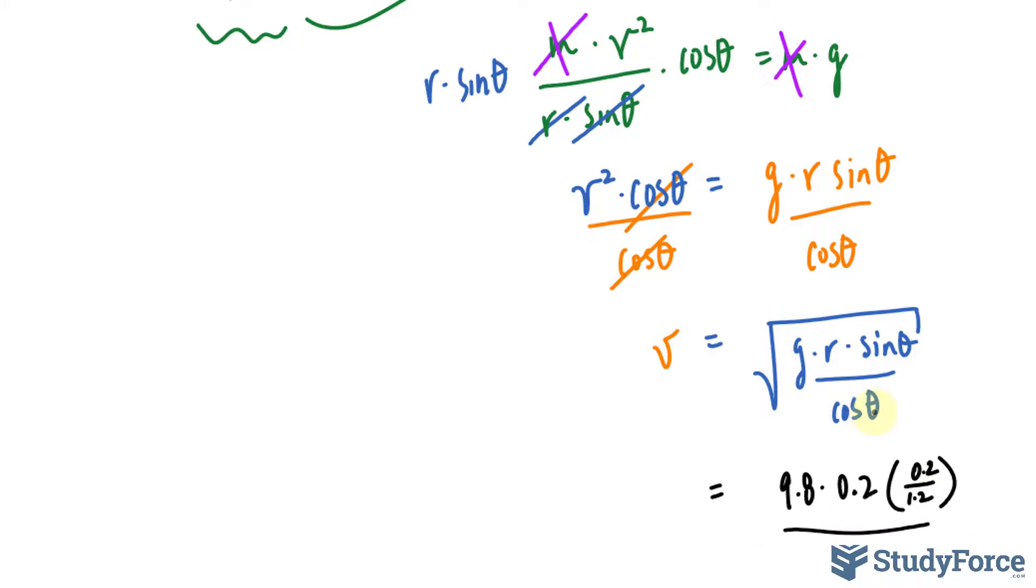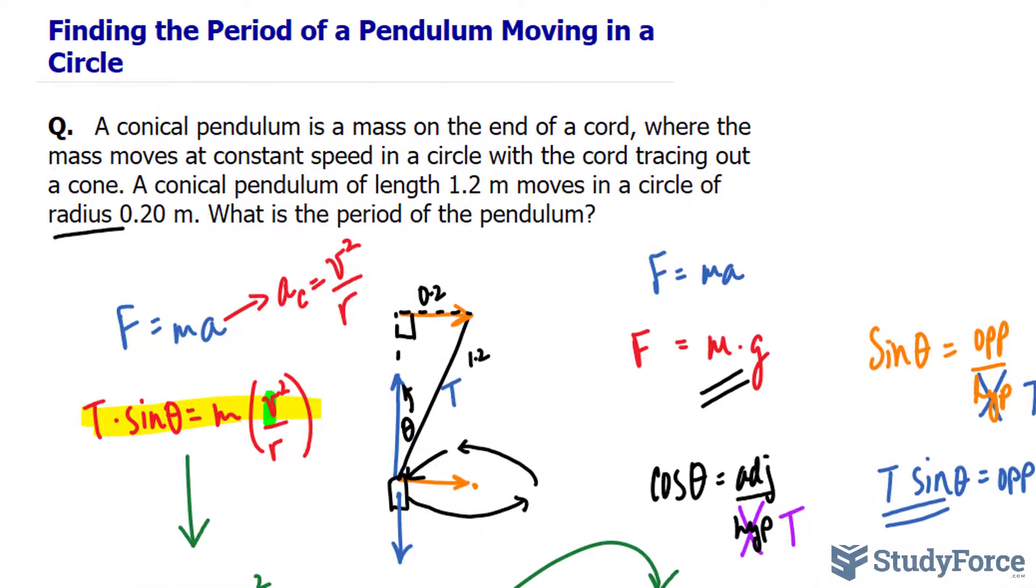And cosine, that's adjacent over hypotenuse. We don't have adjacent, so we'll need to use Pythagorean's theorem. It's adjacent over the hypotenuse. So let's find out what that is. We have a squared plus b squared is equal to c squared. Our hypotenuse is 1.2 raised to the power of 2.